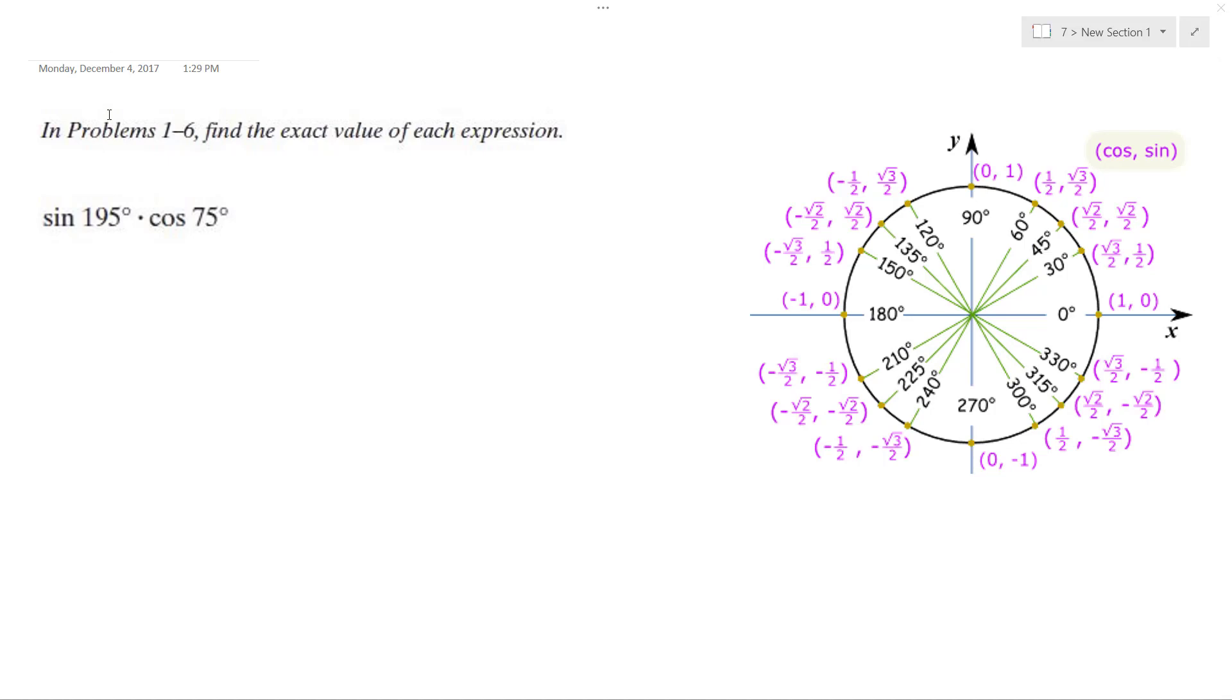Figuring this out, we want to find the exact value. This can be set up as sine a cosine a, so this is actually the same thing as one half of sine 195 plus 75 plus